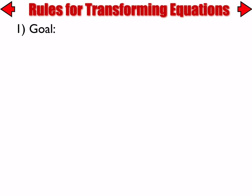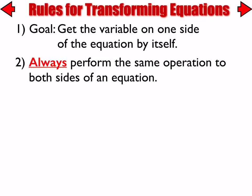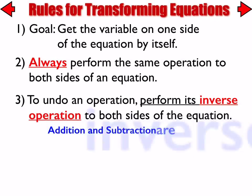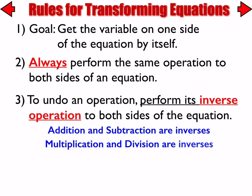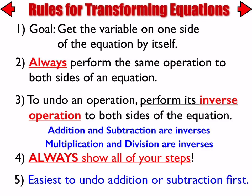So once again, the rules for transforming equations — there are some blank areas in your notes to fill in. The goal is to get the variable on one side of the equation by itself. We always perform the same operation to both sides of an equation. To undo an operation, we perform its inverse operation to both sides. Adding and subtracting are inverses; multiplication and division are inverses. We always show all of our steps, and it's easiest to undo addition or subtraction first. I'll stop for a second to let people fill in the blank areas in their notes.